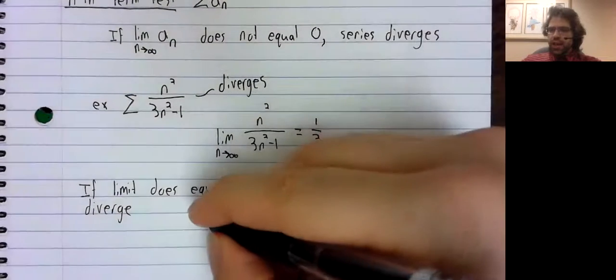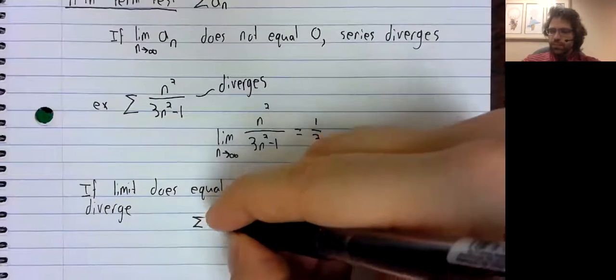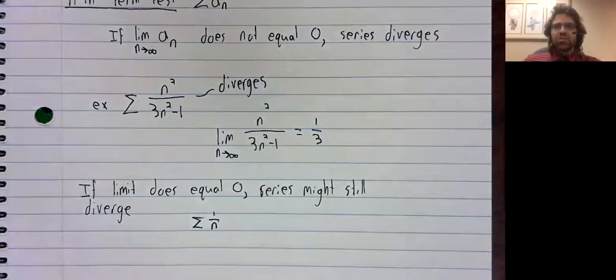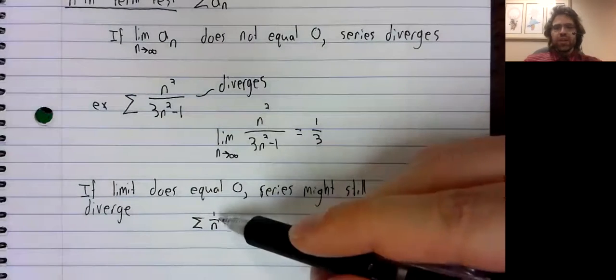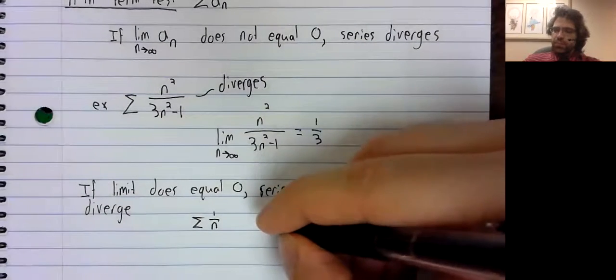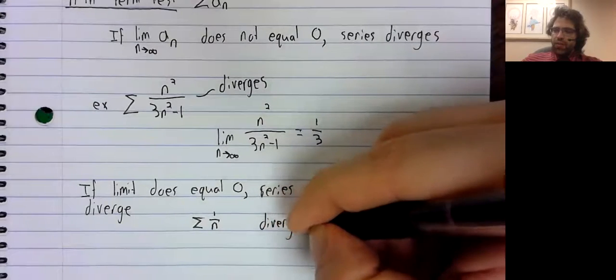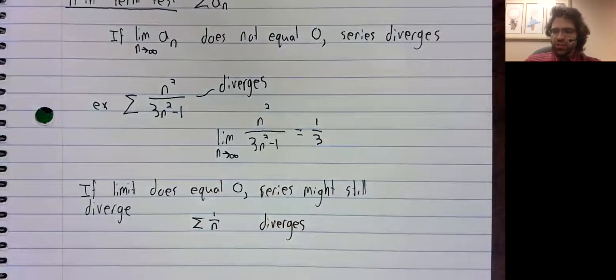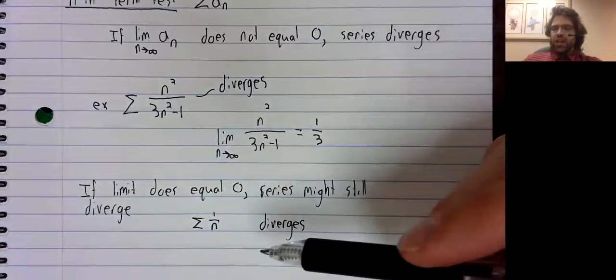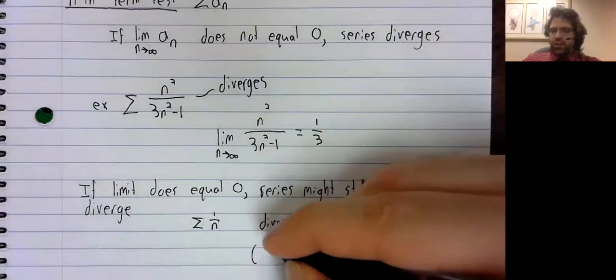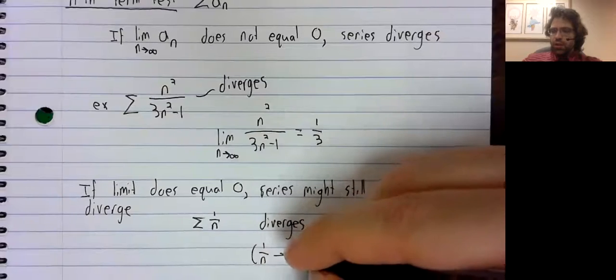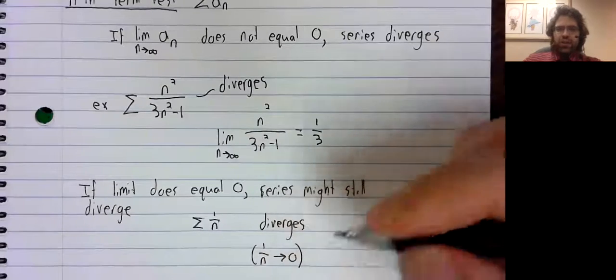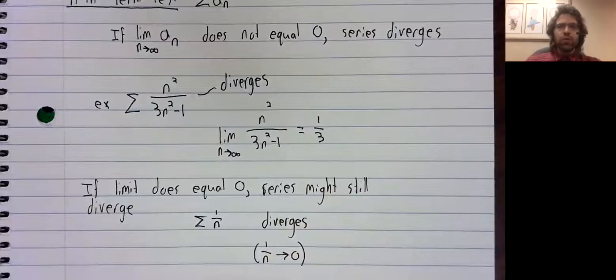Looking ahead a little to the next section: this series is a very famous divergent series called the harmonic series. It diverges even though one over n does go to zero as n goes to infinity.